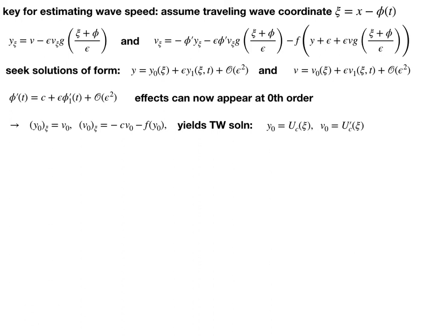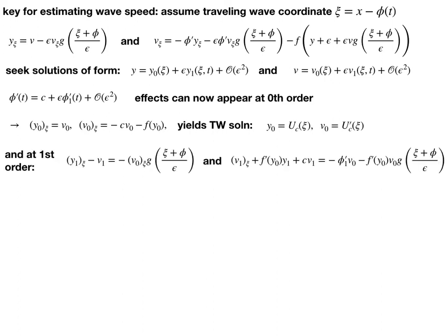At zeroth order we recover the standard traveling wave solution — as we should. We solved that earlier in this talk. It's some traveling front solution with shape u_c(xi), monotone decreasing in xi, going from one down to zero. And v0 is just its derivative.